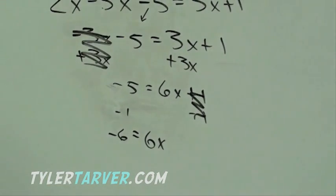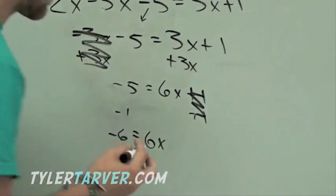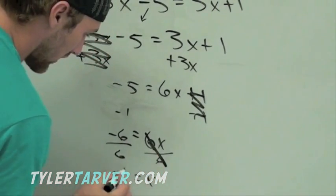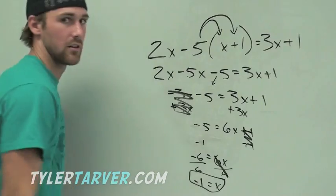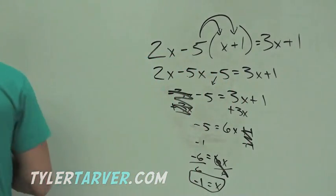Last step, got to get rid of that 6. It's negative 6 times x. The opposite would be divide by 6. That cancels out. It would be negative 1 equals x. The end. Oh, okay.